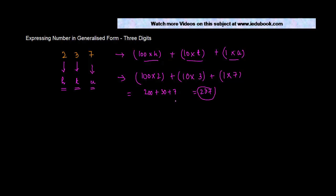So if you have to write any three digit number in a generalized form, you can do it by following this particular method. So let's say you had 637. How will you write it in a generalized form?